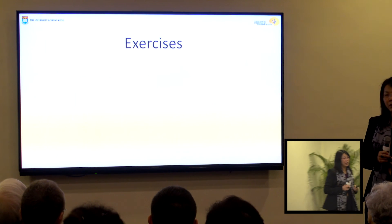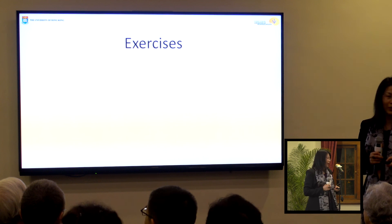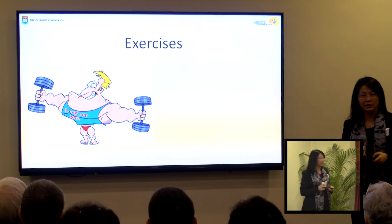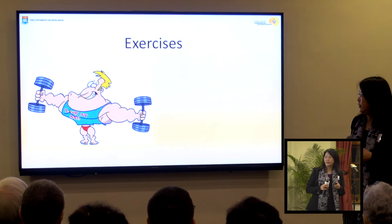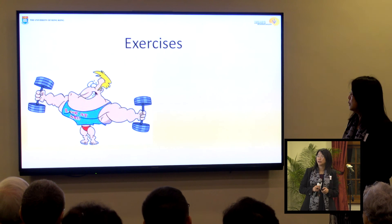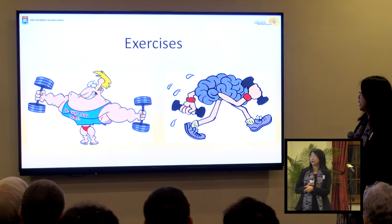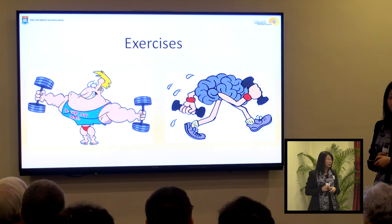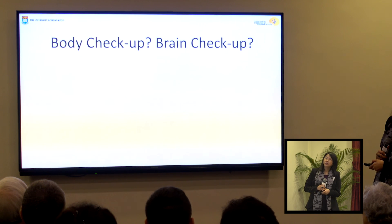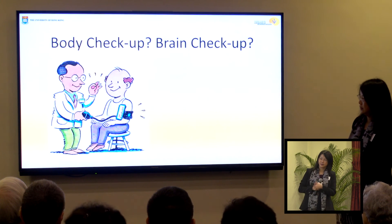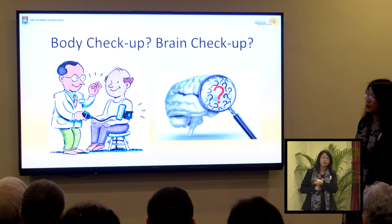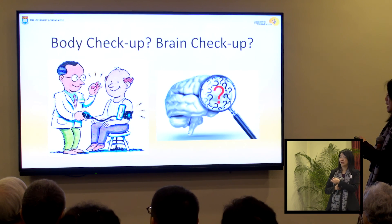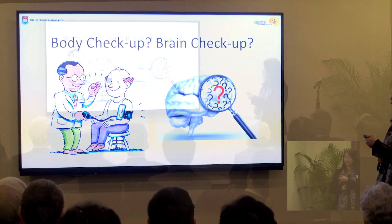Before I end, people ask me what we need to do to keep our brains healthy. Of course exercise is important. Nowadays society places a lot of emphasis on physical exercise, but I would also encourage you to think about brain exercise. Don't forget: if you don't use it, you lose it. And one last thing — we do body check-ups, but how many of you think about a brain check-up? This is such an important organ, really governing our whole life and who we are. Thank you.